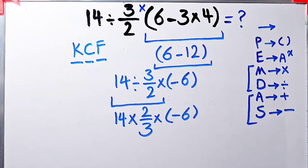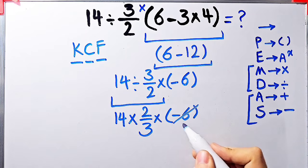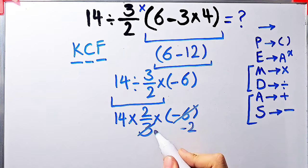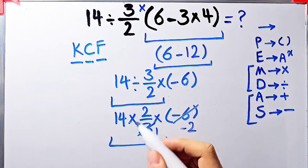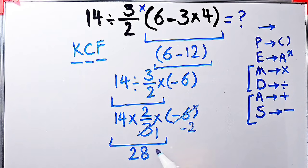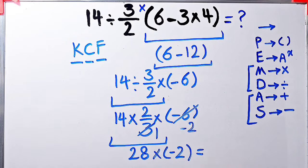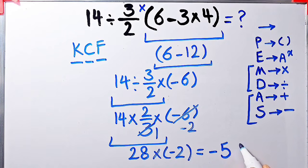Negative 6 divided by 3 equals negative 2, and 3 divided by 3 equals 1. Now we have 14 times 2, then times negative 2. 14 times 2 equals 28. Now we have 28 times negative 2. 28 times negative 2 equals negative 56. The final answer of this question equals negative 56.